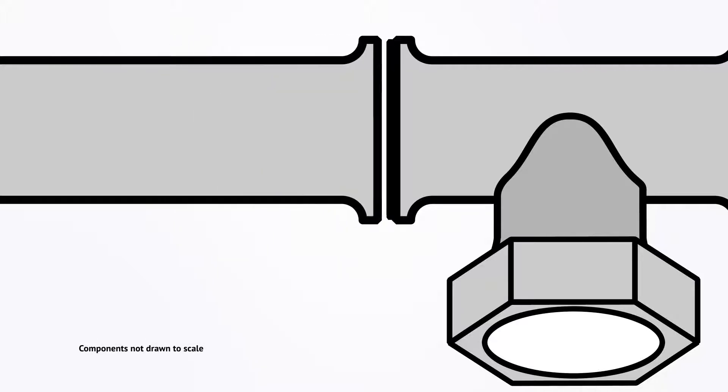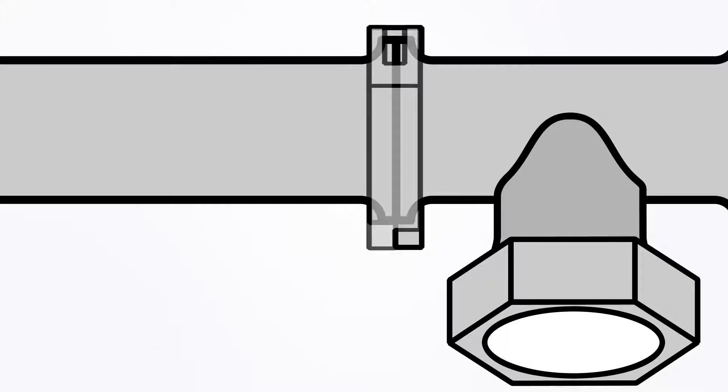Then, place the QualaTru sanitary tri-clamp inspection port in place. Once you have the port firmly in place, wrap the tri-clamps around both bevels and close.